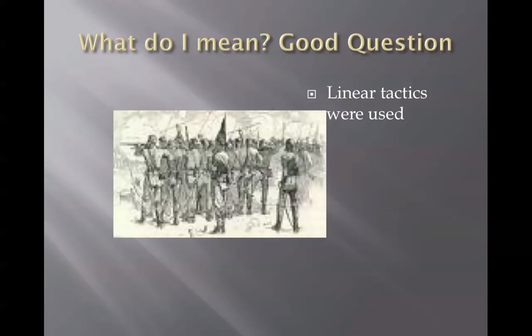This is what they would use. By the time the Civil War came around, artillery was very accurate, rifles were much more accurate, and muskets were more powerful with longer range — so a lot of people were killed.